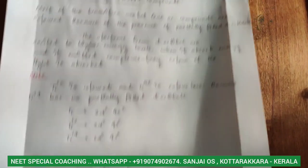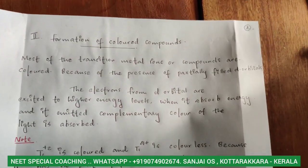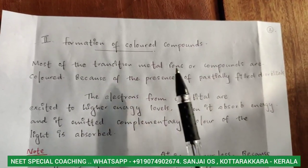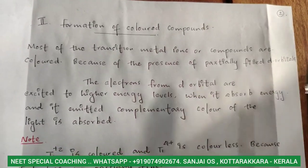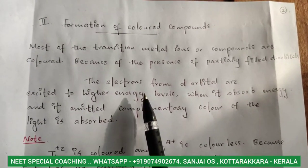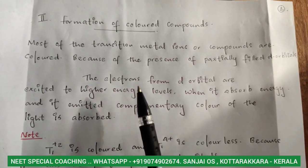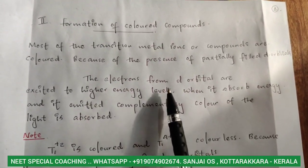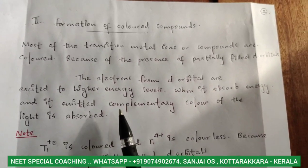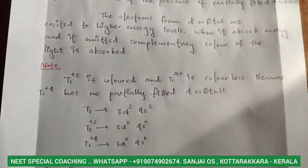We will discuss the formation of colored compounds. Transition metals and d-block elements are colored because they have partially filled d-orbitals. Most transition metal ions are colored due to the presence of partially filled d-orbitals. The electrons go to a higher energy state — the electrons from the orbitals are excited to higher energy levels when they absorb energy, and the complementary color of the absorbed light is emitted.